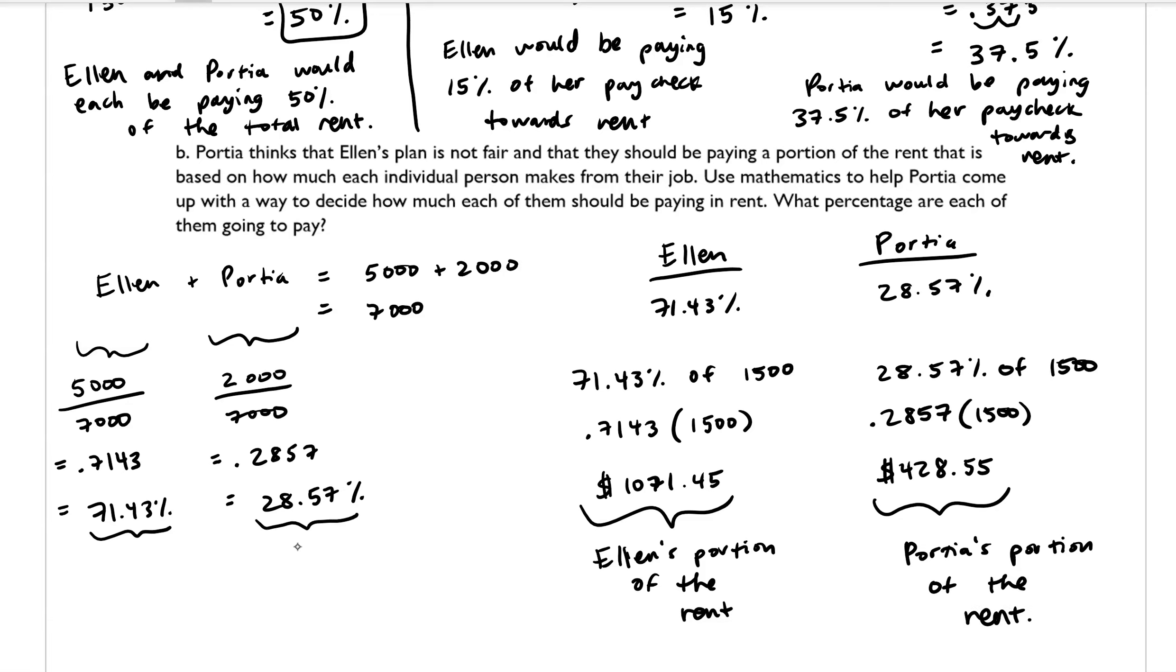So this is very much a decision that many couples have to make when they move into an apartment together. So it's up to you to decide which plan do you think is more fair? Should they pay the rent based off how much their income is? Or do you think that they should both be paying 50% of the rent? That's up for you to decide. But here's the mathematics behind it. Thank you.